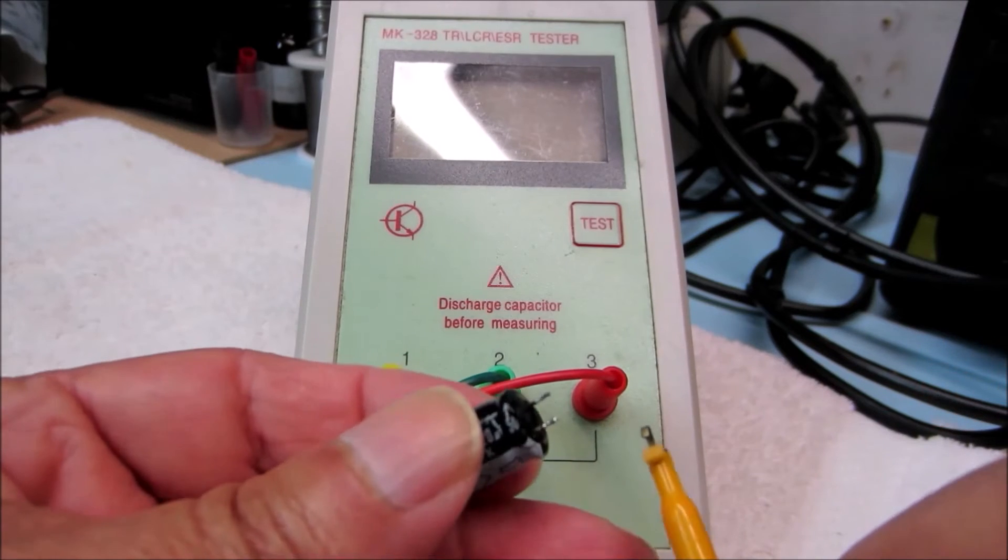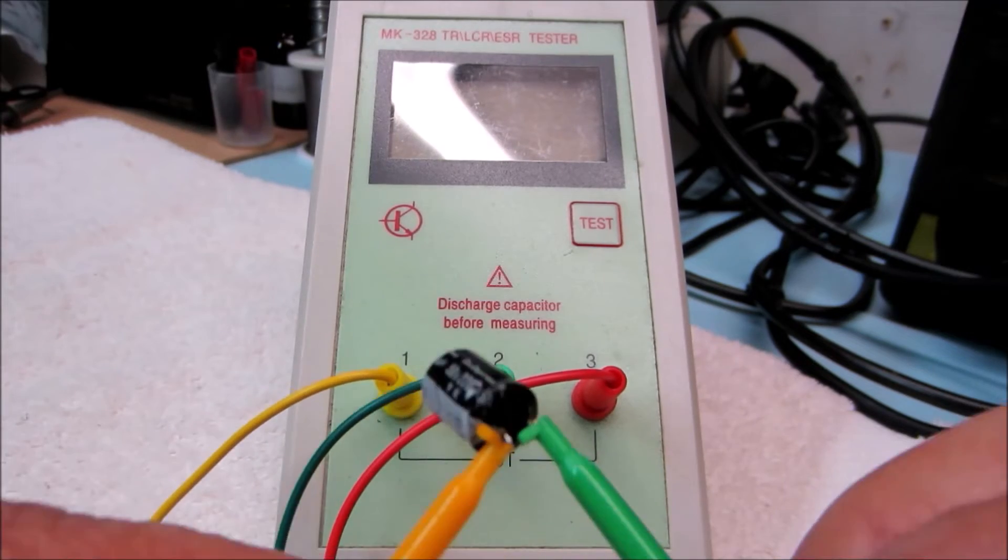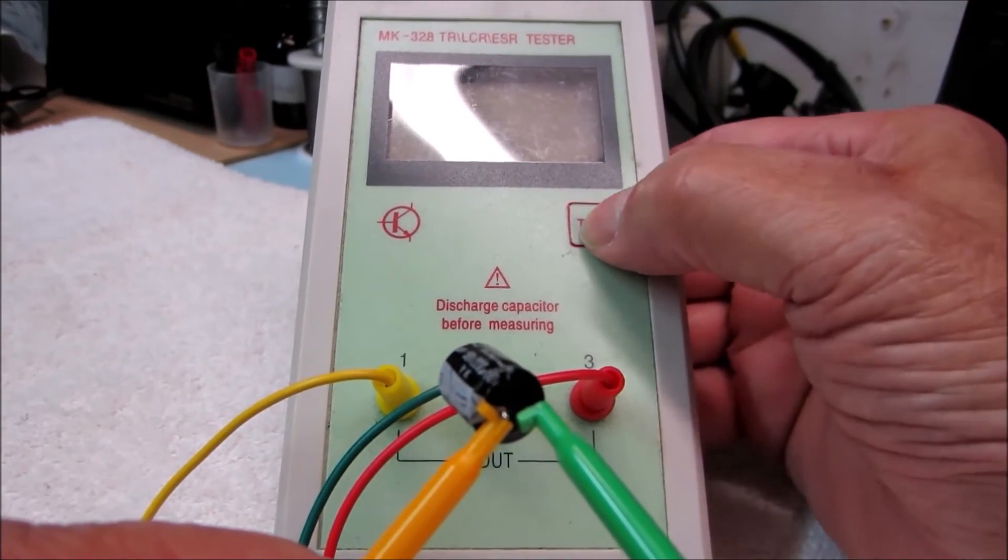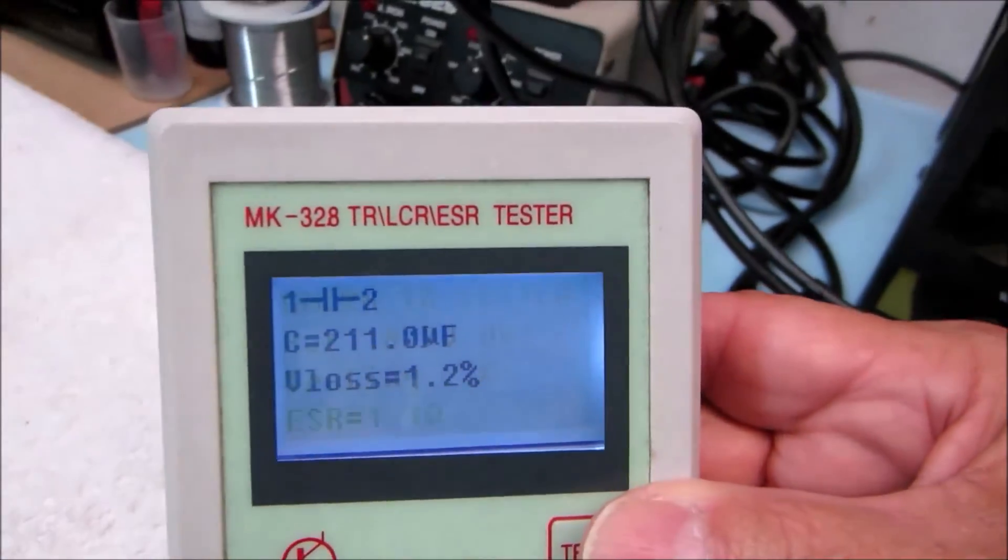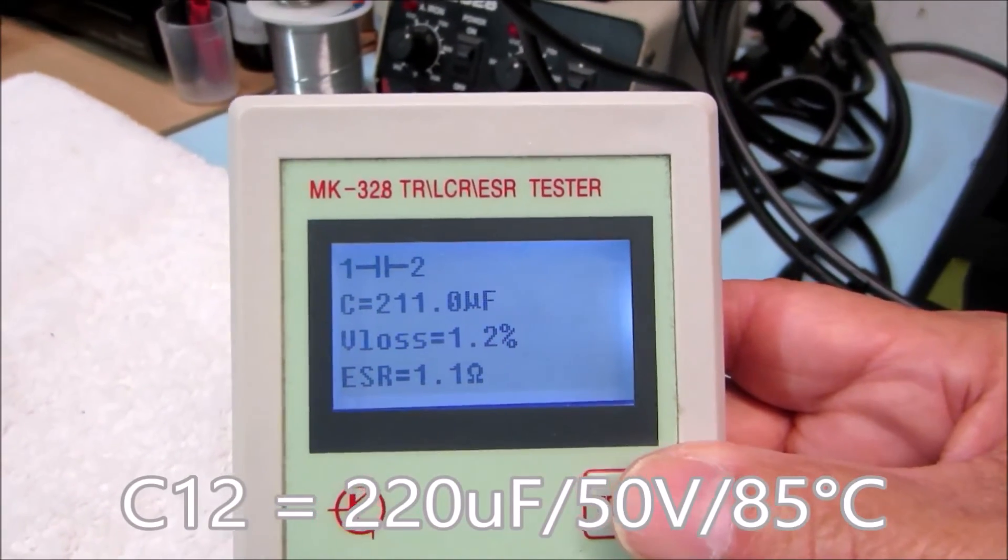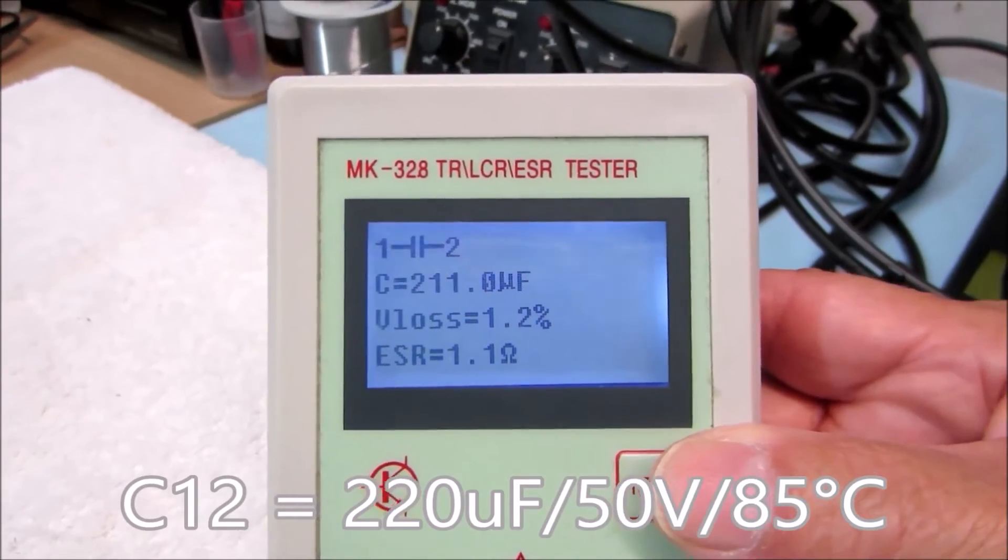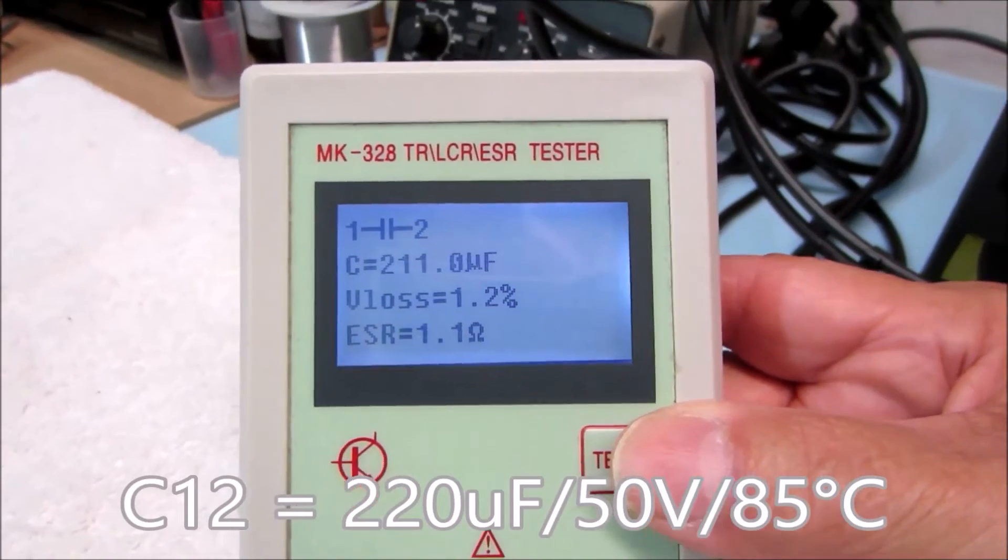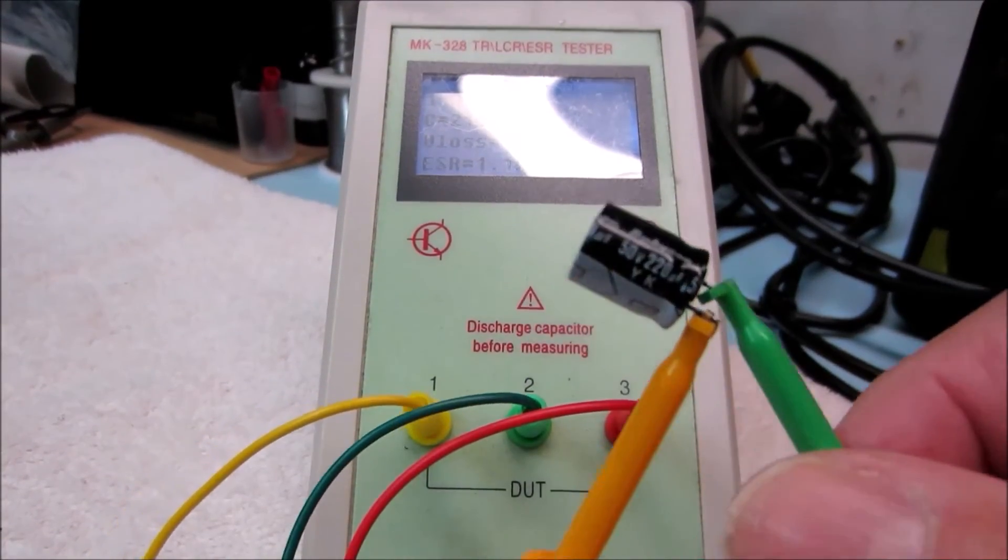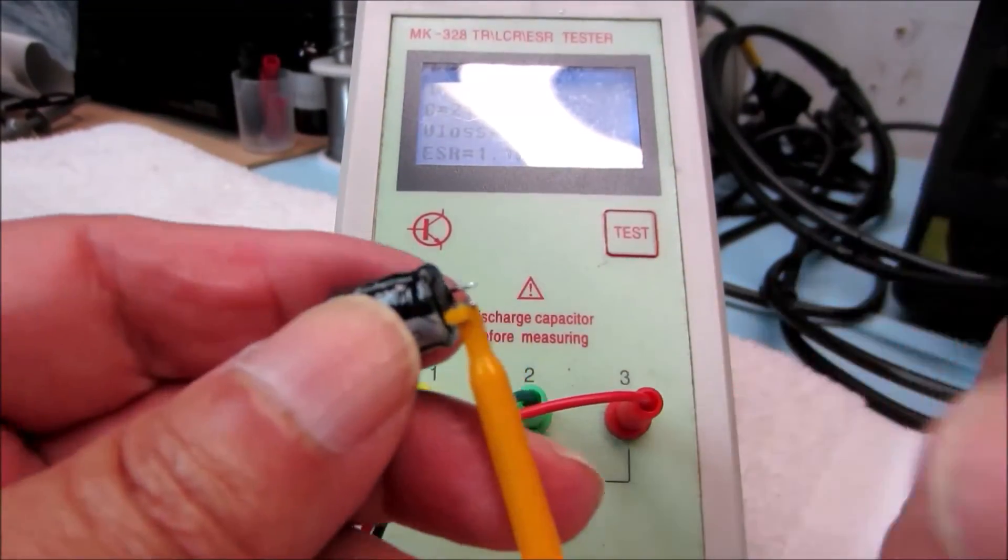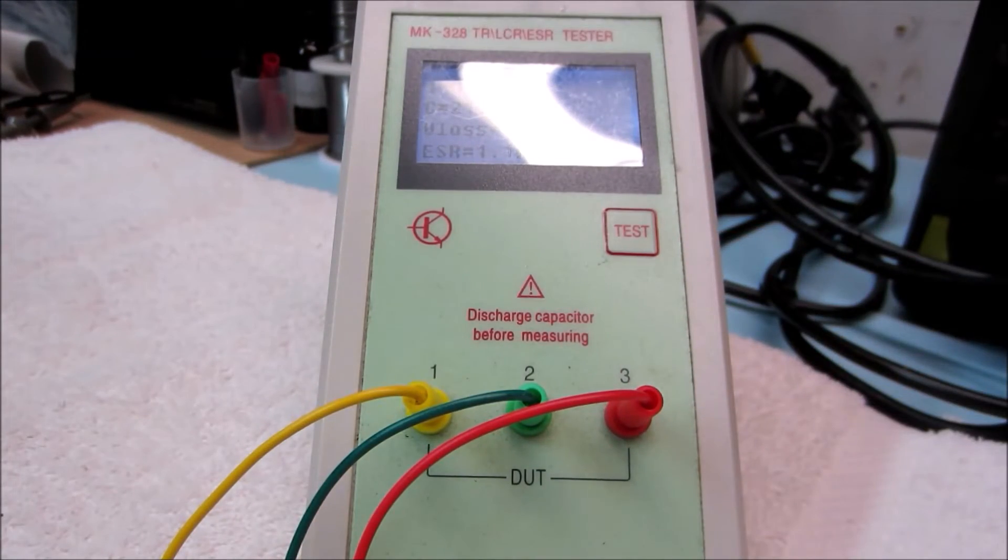What we're trying to prove here is that you can't always rely on your instruments. And here's the last one. This one was leaking too. 211 microfarad, VLOS 1.2%, ESR 1.1 ohm. Nothing to be alarmed about here. So according to this tester, these are all good components. Yet, we know that these are the components that were causing the failure. So once again, visual inspection is your best test tool.